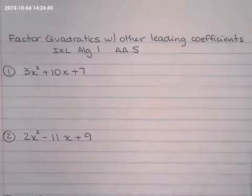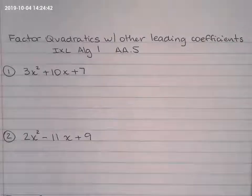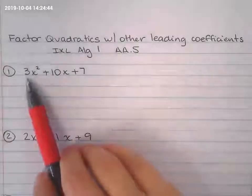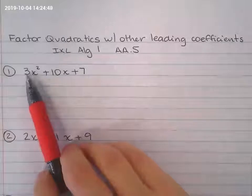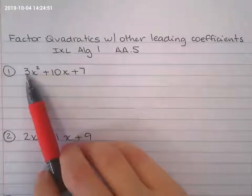We're factoring quadratics with leading coefficients different than 1. So the leading coefficient is the number that goes right there in the front. Usually it's way simpler and easier if this number right here is 1, but not in this case.